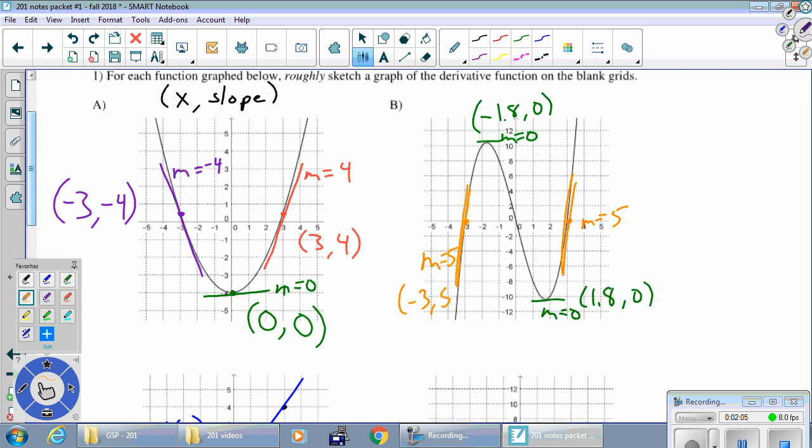Maybe that's also a 5. So these two points, negative 3, comma, slope is 5. Positive 3, comma, slope is 5. And then we'll pick one point in the middle. How about at the origin?